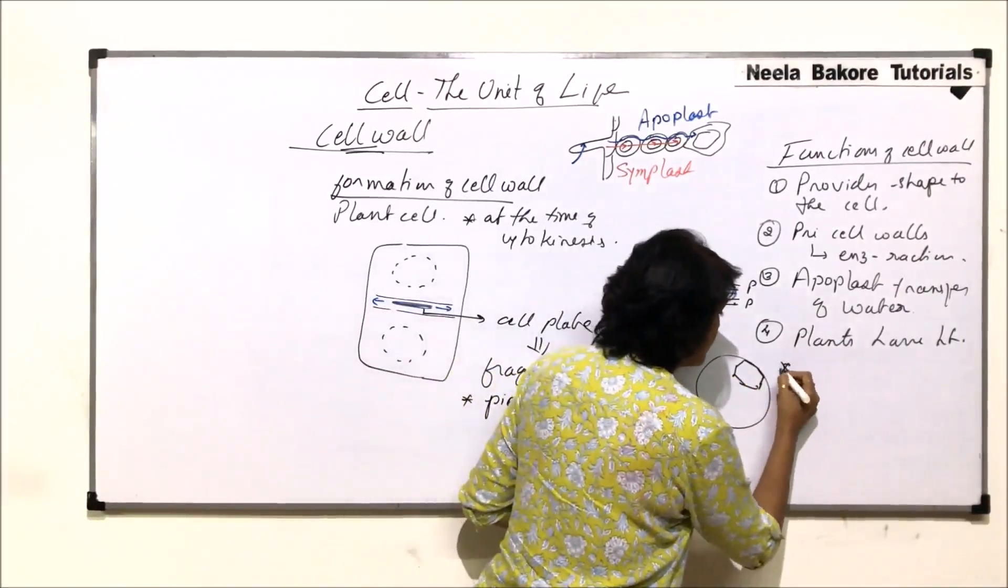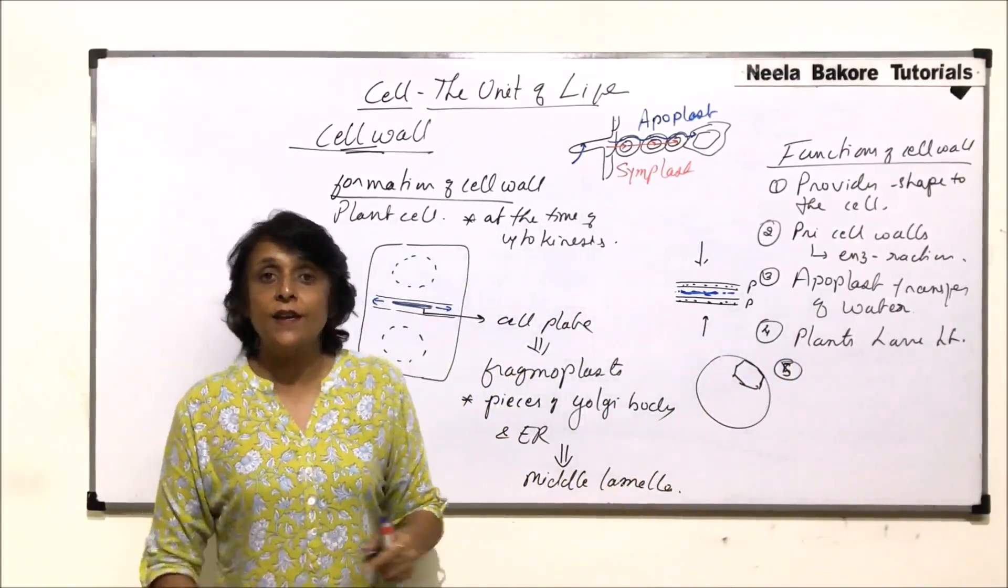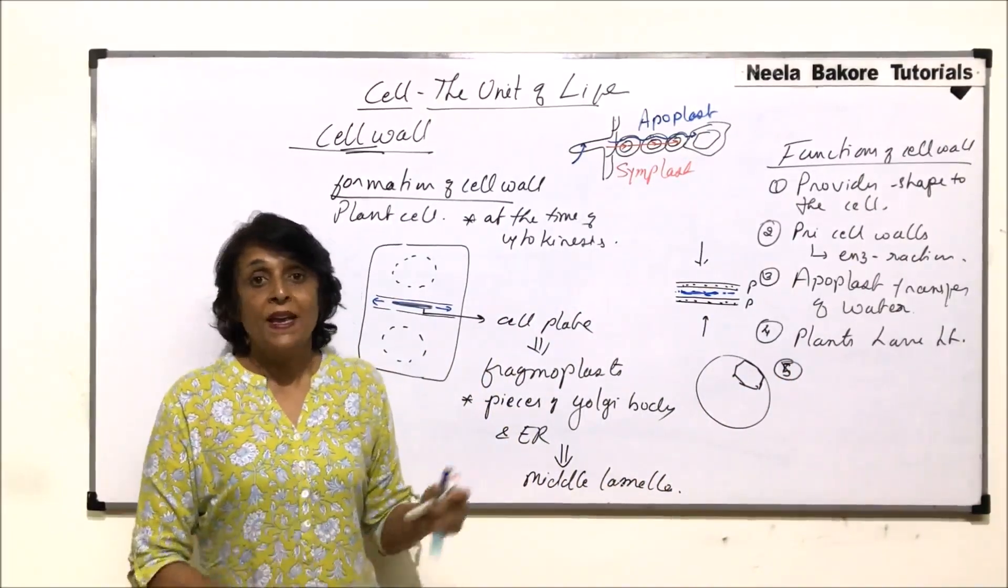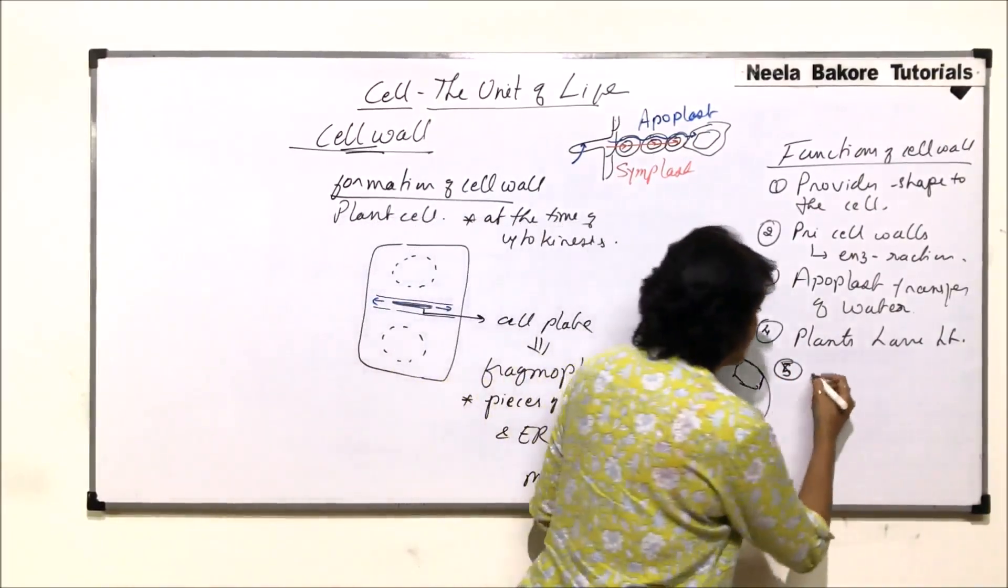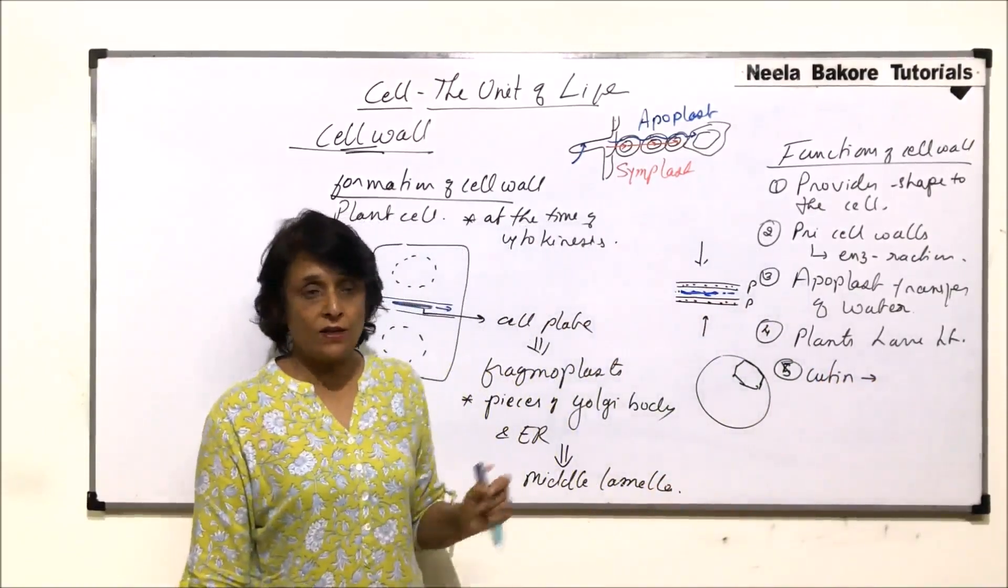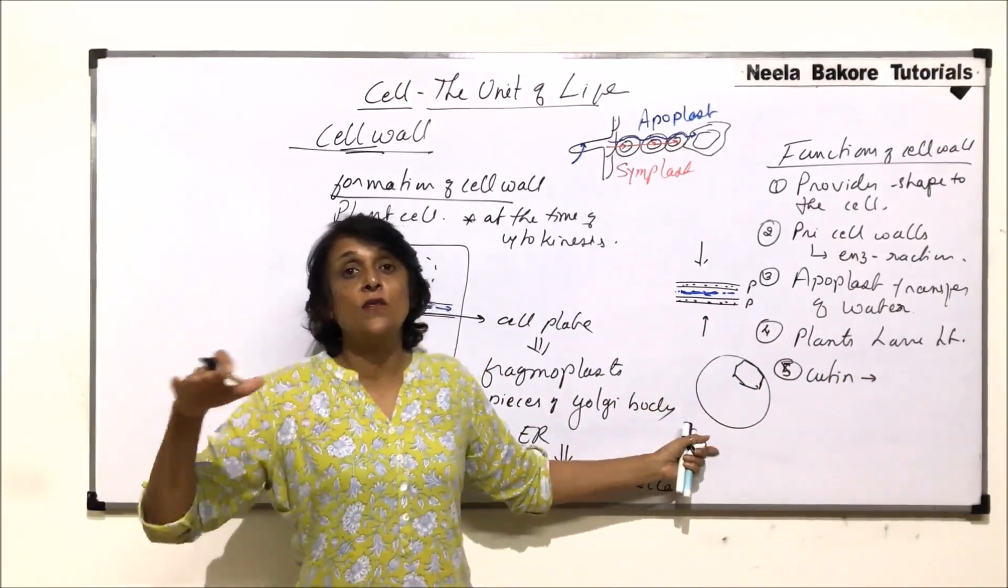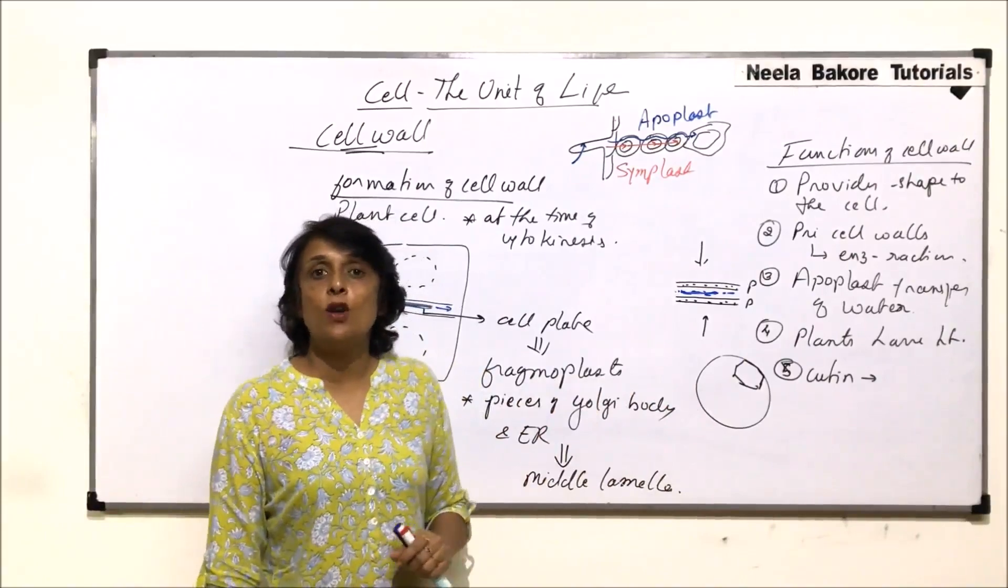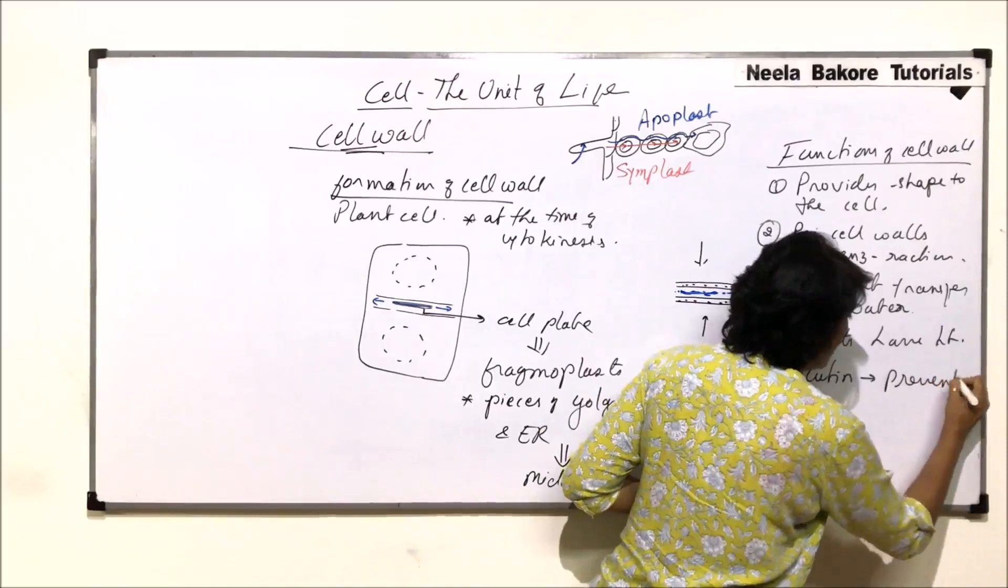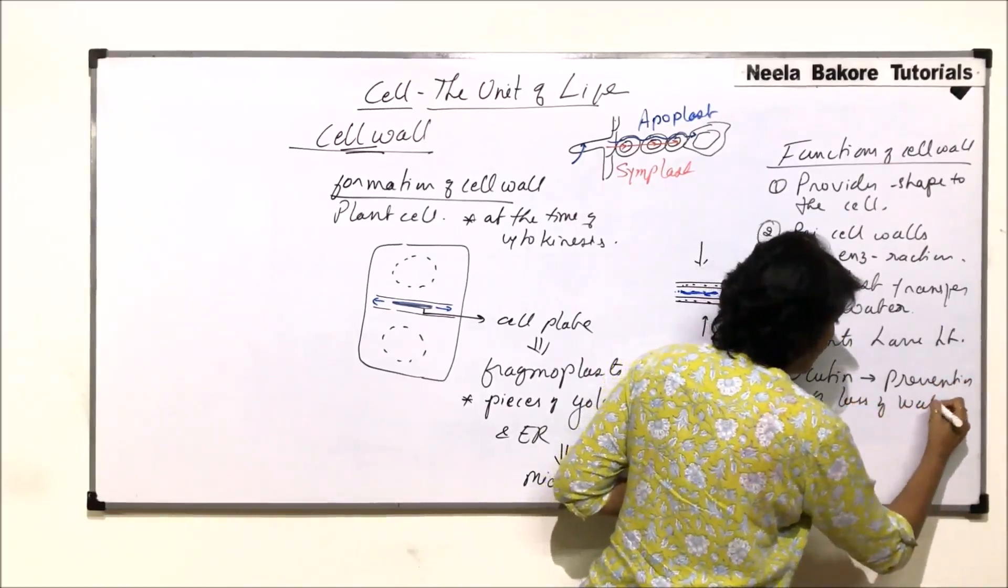So plants are able to attain height because of this. This is like giving them a structure and that's why they are able to become taller. All these structures come under the functions. All these functions are of a cell wall. Now when we are talking of cell wall function, we do not forget that the secondary layer and tertiary layers also have certain depositions of a substance. So what is the role of that substance? Cutin, which is deposited in the secondary layer, secondary cell wall, and this secondary cell wall is present on the surface. Cutin prevents loss of water.